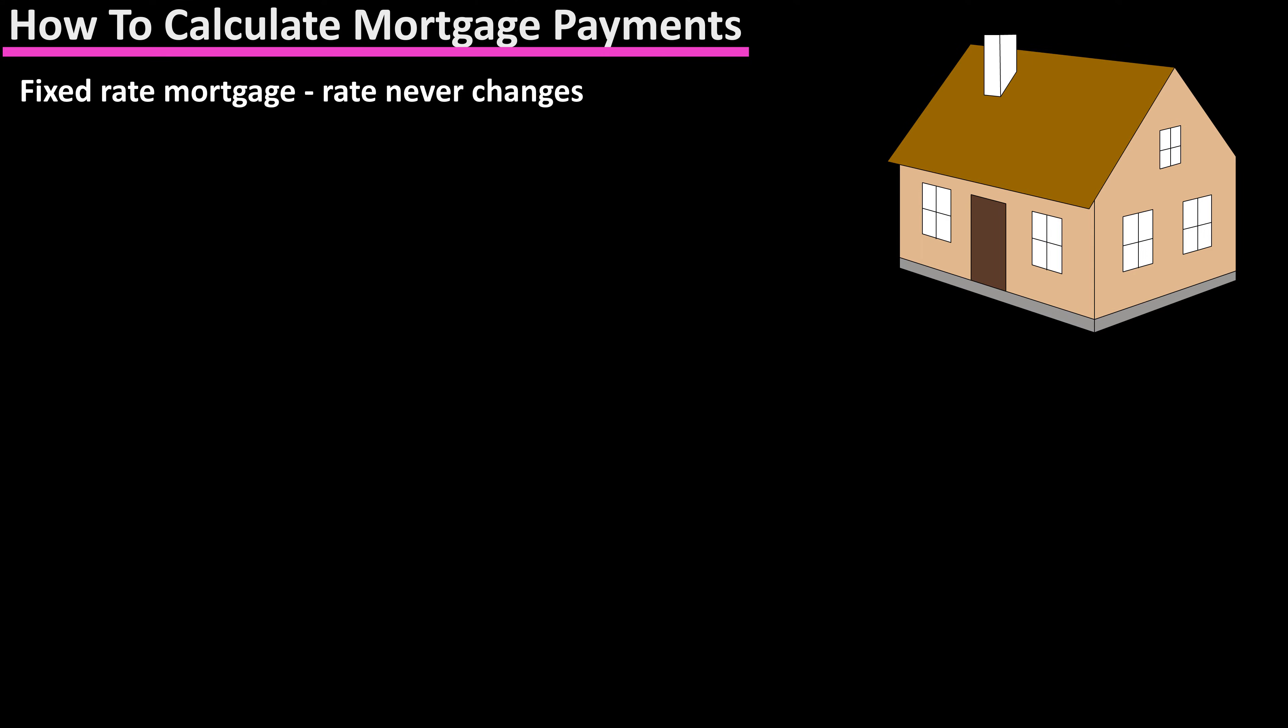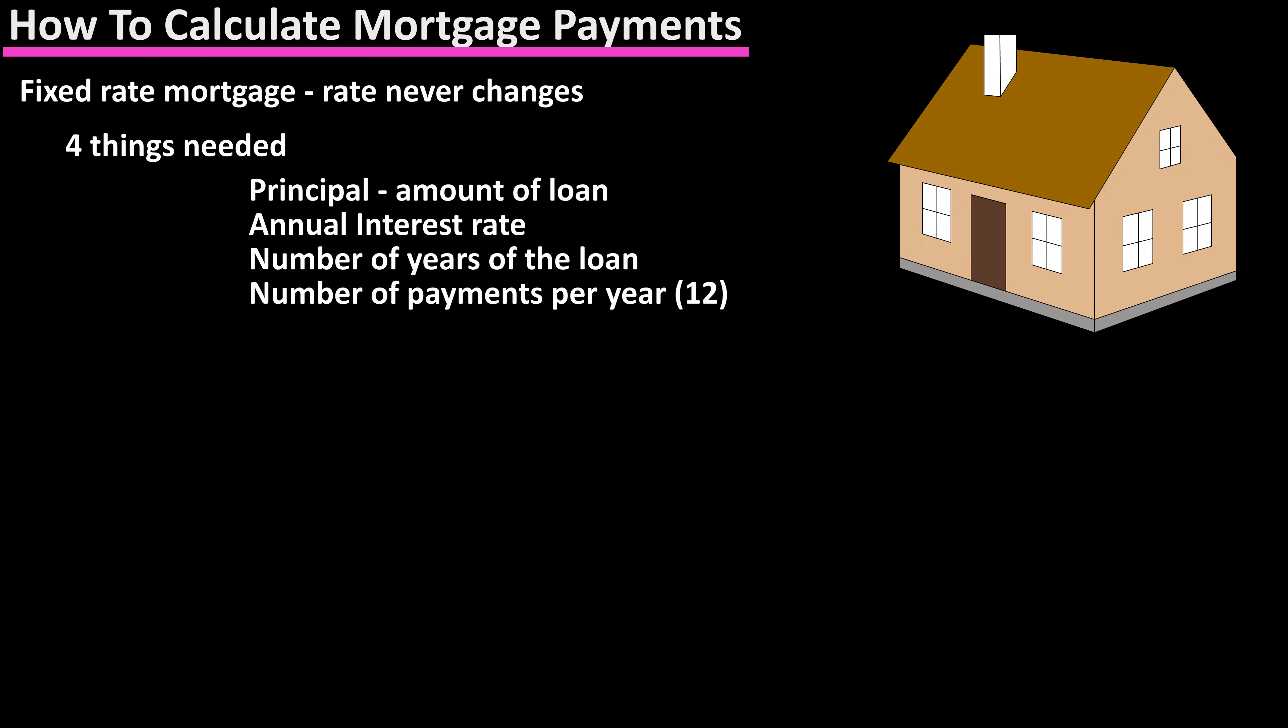To calculate a mortgage payment for a fixed-rate mortgage where the interest rate never changes, there are four things you need to know: the principal, or the amount owed after the down payment, the annual interest rate, the number of total years for the loan, and the number of payments per year, which typically is once a month, so 12 payments per year.